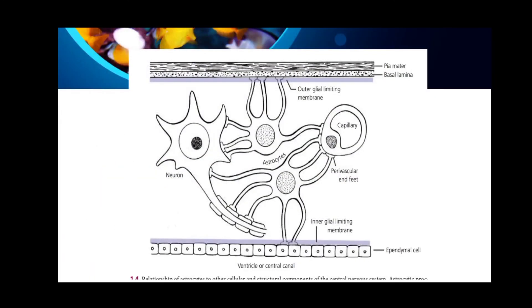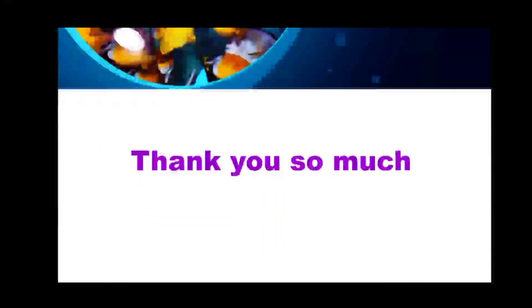Glial cells do not produce action potentials, but growing evidence indicates that they can indirectly monitor the electrical activity of neurons. Next, we will discuss the general structure of astrocytes in our next video. That concludes today's video on neurology. Please don't forget to watch the next video and subscribe to our channel.